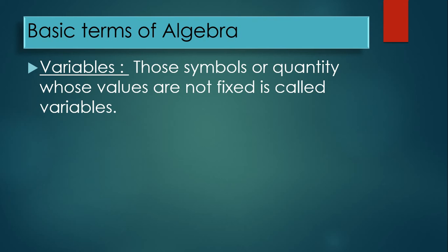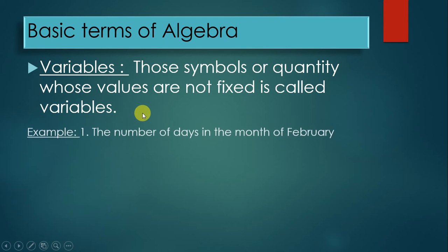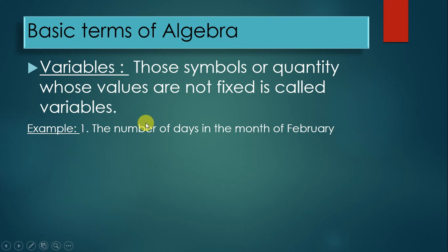In an algebraic expression, x can have different values in different equations. Those symbols or quantities whose values are not fixed are called variables. For example, the number of days in the month of February is a variable.